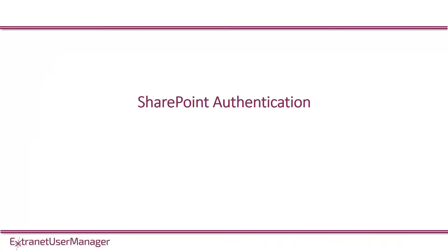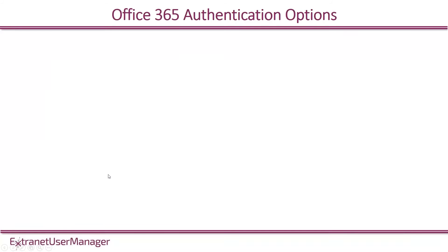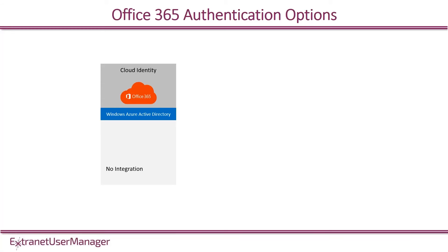The first thing I want to talk about from an implementation point of view is authentication in SharePoint, specifically to Office 365. There are three primary options. The first is a simple cloud identity — you've signed up for an Office 365 subscription and created an identity in the cloud with no integration to your on-premises Active Directory whatsoever. You can run your entire business that way — simply go into the browser, create accounts for all of your staff, and invite them into your Office 365 from SharePoint, Exchange Online, and Skype for Business. That's really the easiest to get going.